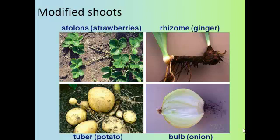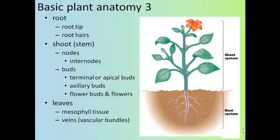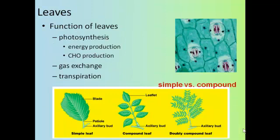Now let's talk about the leaves, the third major plant organ. Leaves are made of mesophyll tissue and veins, and those veins are actually vascular bundles, which we'll talk about later. The primary function of the leaf is to do photosynthesis to produce energy and carbohydrates for the plant, gas exchange of oxygen and carbon dioxide, and transpiration — the loss of water through the stomata of the leaves.